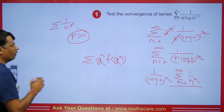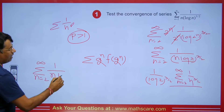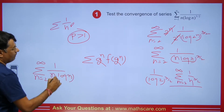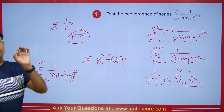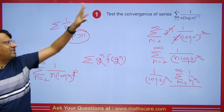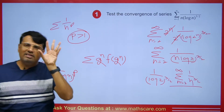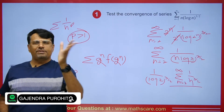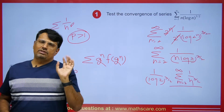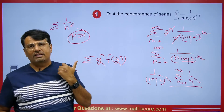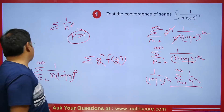So here we have a conclusion: for the series summation n = 2 to infinity of 1 / (n (log n)^p), if the value of p is greater than 1, then this series is convergent. If the value of p equals 1 or is less than 1, it diverges. This is important because sometimes the proof is asked: for what value of p is this series convergent?